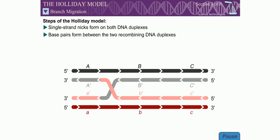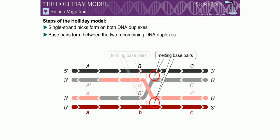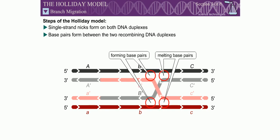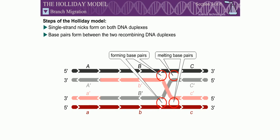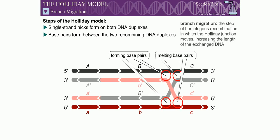The Holliday junction can move along the DNA by repeated melting and formation of base pairs. Each time the junction moves, base pairs are broken in the parental DNA molecules, and identical base pairs are formed in the recombination intermediate. This process is called branch migration.